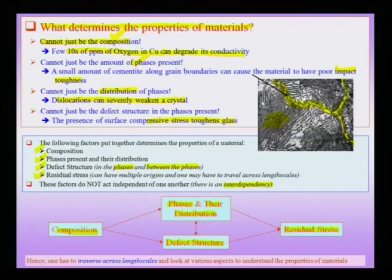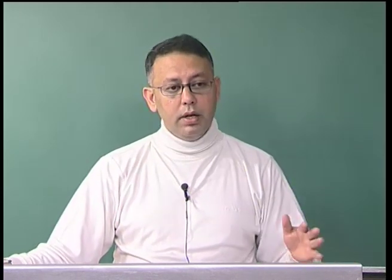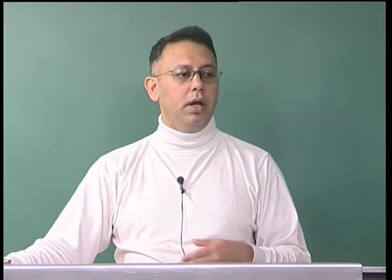Therefore, if one wants to understand properties of a material, one needs to consider various factors: the composition, the phases and their distribution, the defect structure, the residual stress — and in doing so has to traverse across length scales. One needs to go from the atomic length scale to the length scale of the entire component, and this journey across length scales has to be integrated into a form which we normally call the property of the material — which could be ductility, fracture toughness, optical transmittance, magnetic or electric polarization, or magnetic susceptibility.